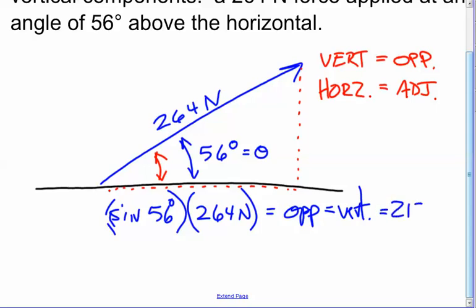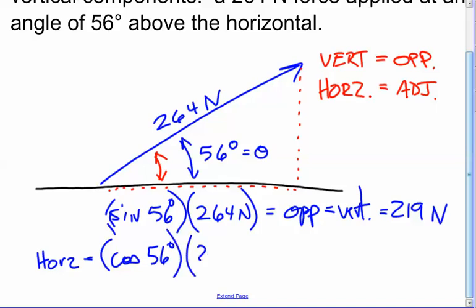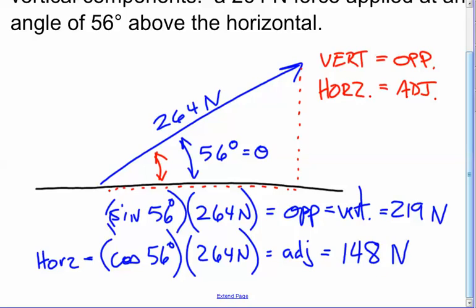So we'll go with 219 Newtons for the vertical component. The side that is adjacent — the horizontal component — is going to be equal to cosine of 56 degrees times our hypotenuse, 264 Newtons. Putting that in, cosine of 56 times 264 is equal to 147.6, or approximately 148 Newtons.